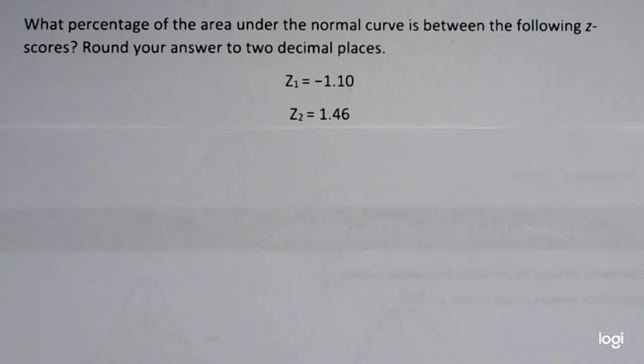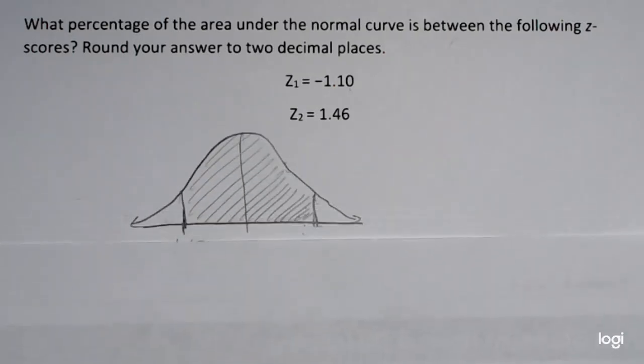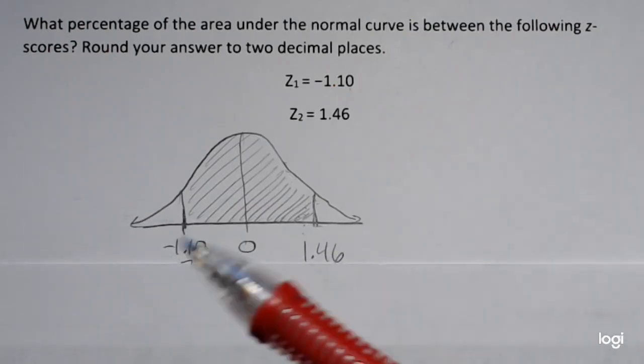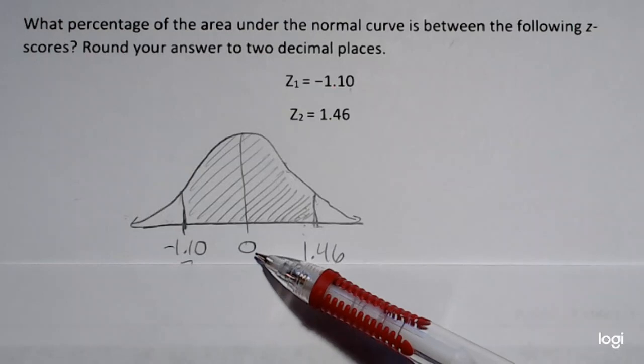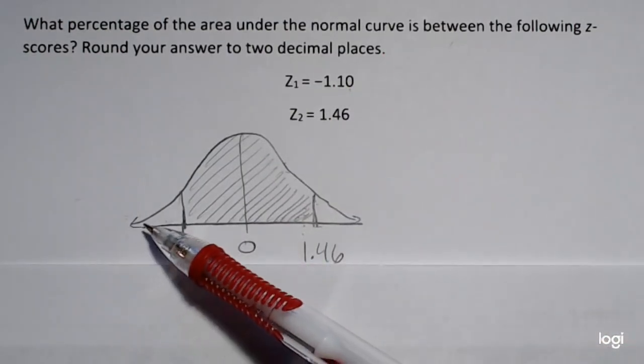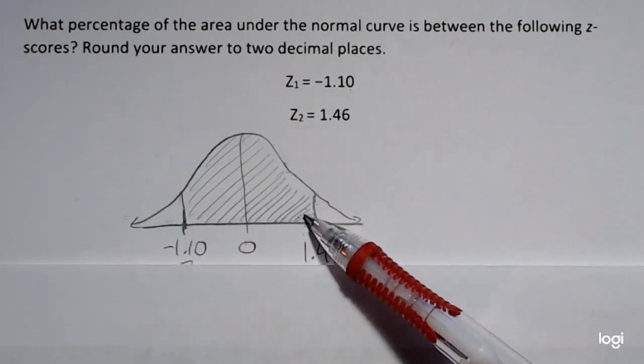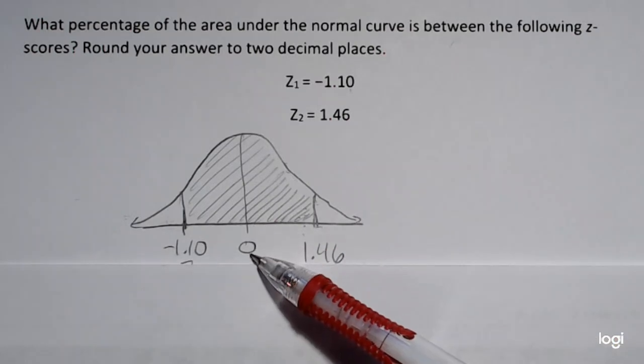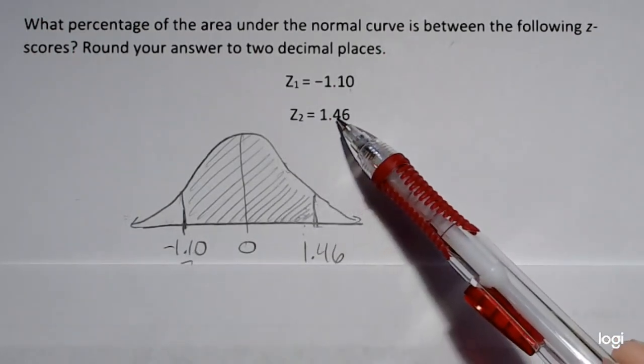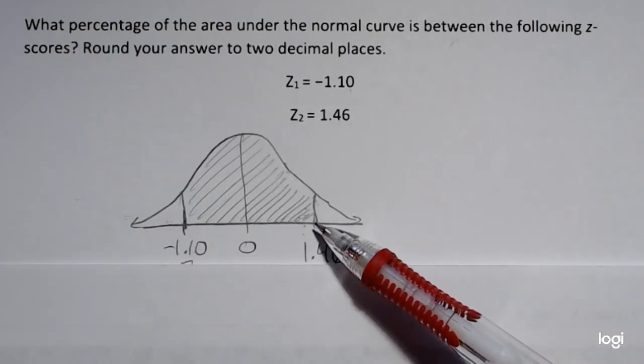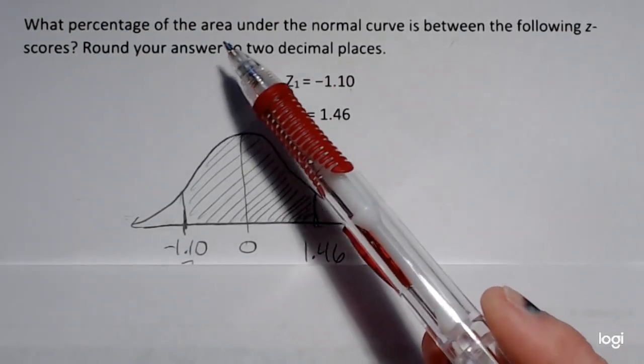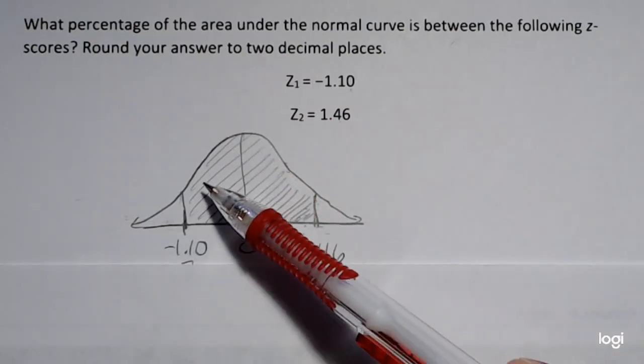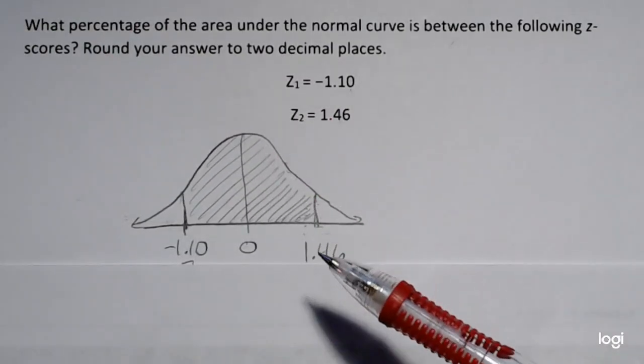So what you want to do is sketch the area that they're looking for. I went ahead and drew a bell curve or a standard normal curve with a mean of 0, so I put 0 in the middle. The horizontal axis is a real number line, so a z-score of negative 1.10 will be to the left of 0, and then my second z-score is 1.46. Now because they're asking for a between situation, I'm going to shade between those two values.